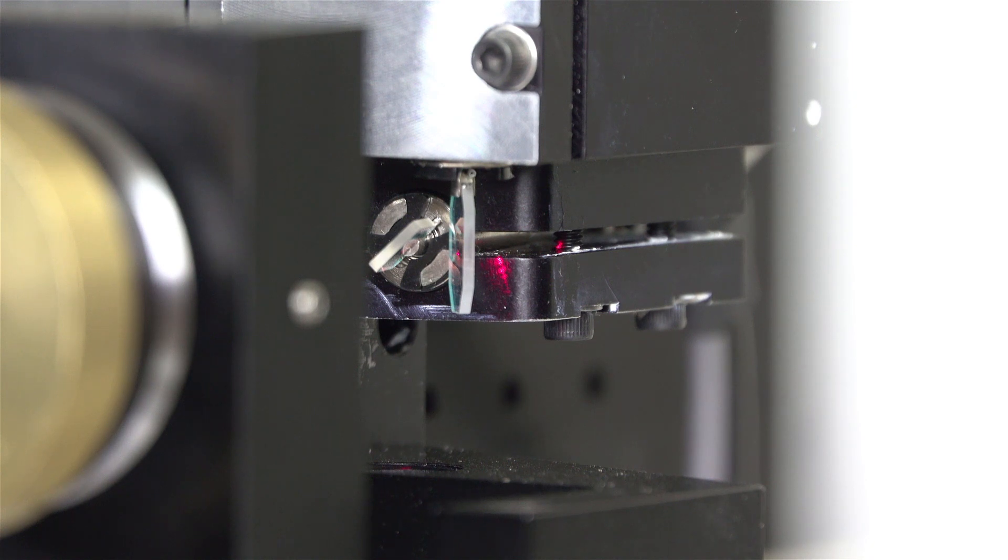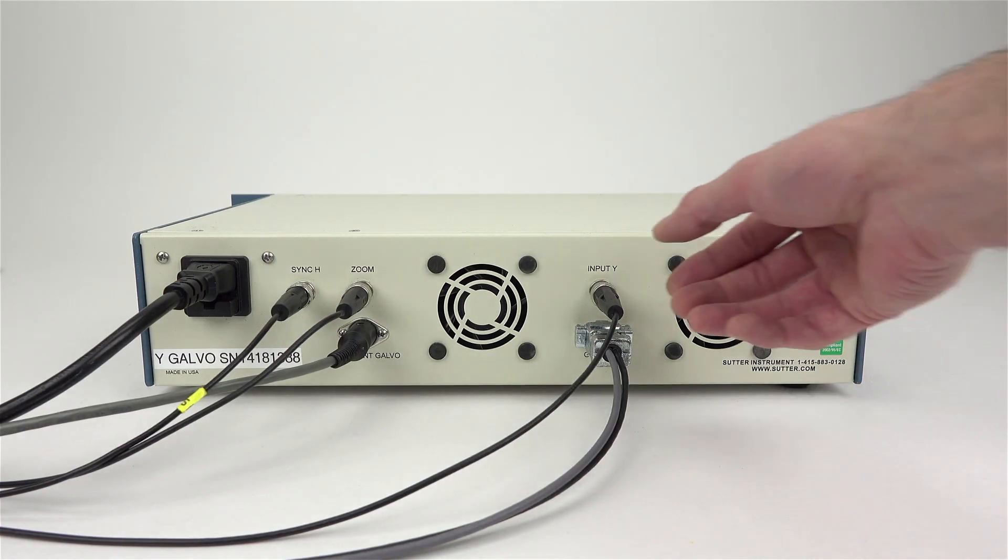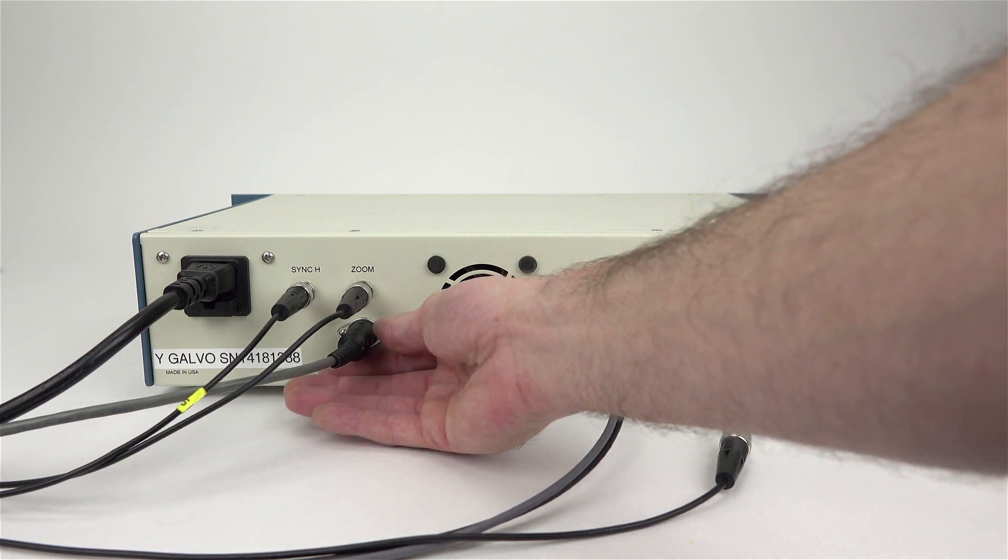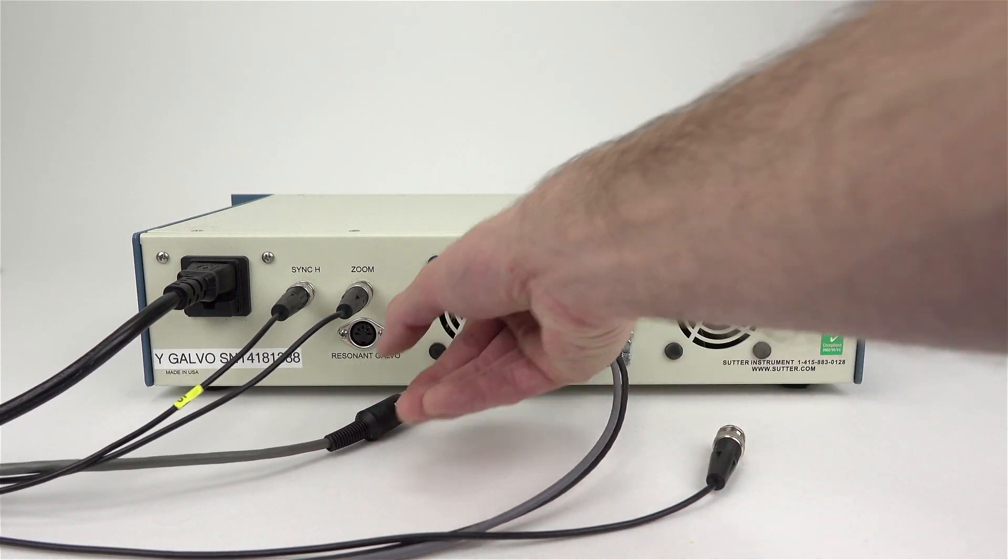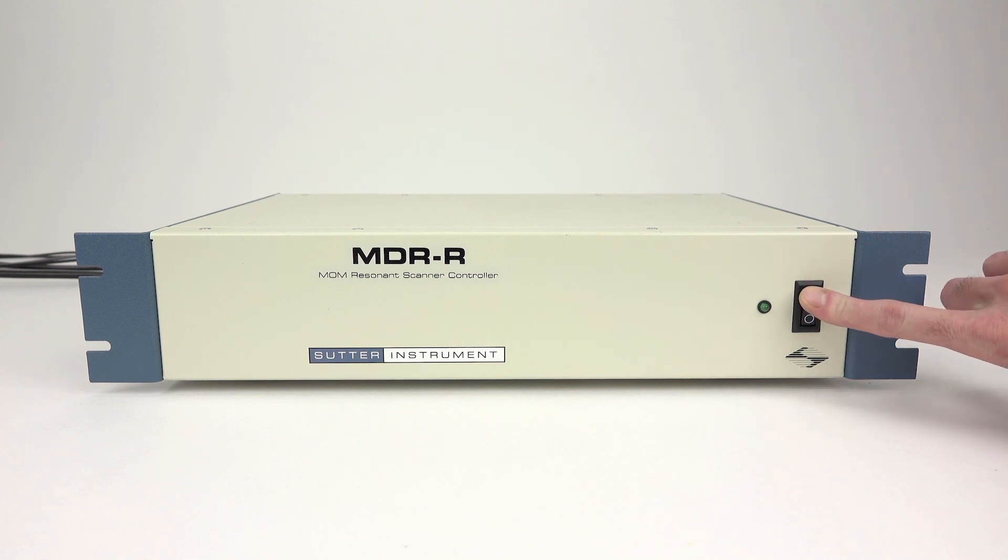For resonant scanners, also start with the controller powered off. On the back of the MDRR controller, unplug the Y BNC cable, then additionally unplug the resonant scanner cable from the back of the controller. Then power it up, and the scanners should jump to their centered position, about one second after flipping the switch back on.